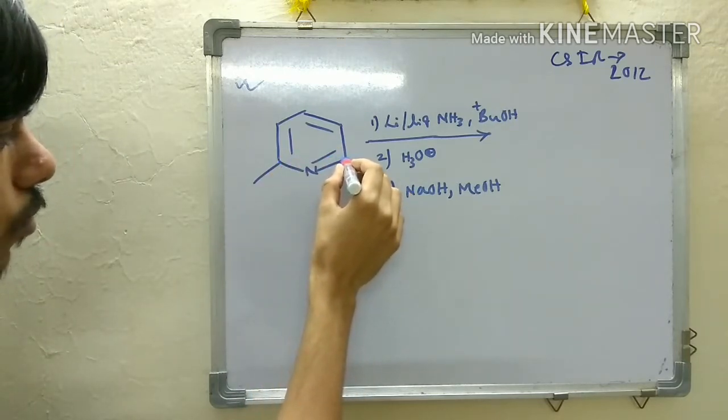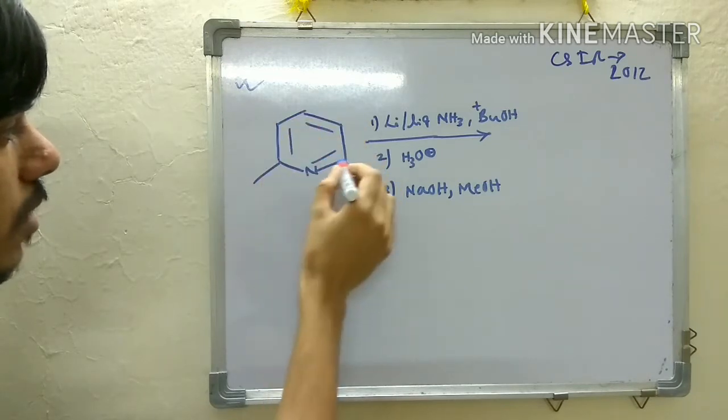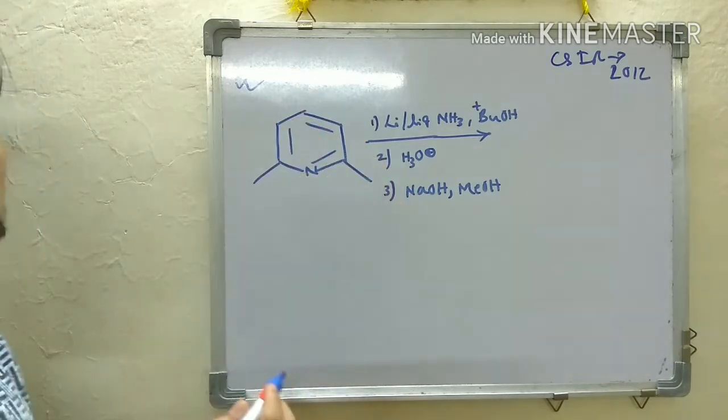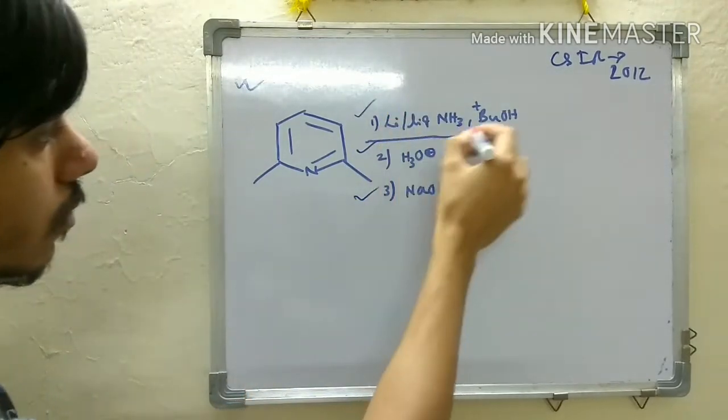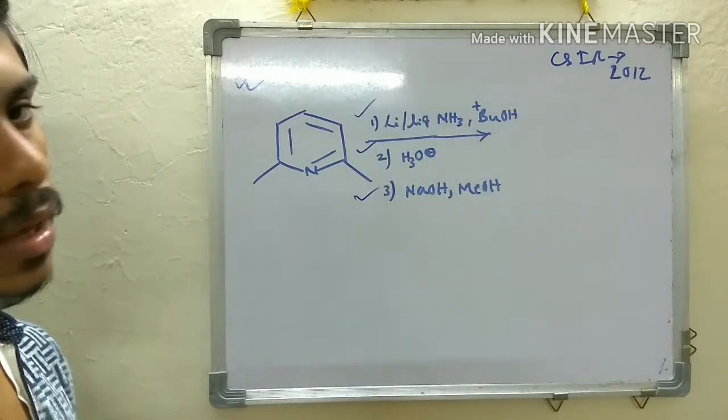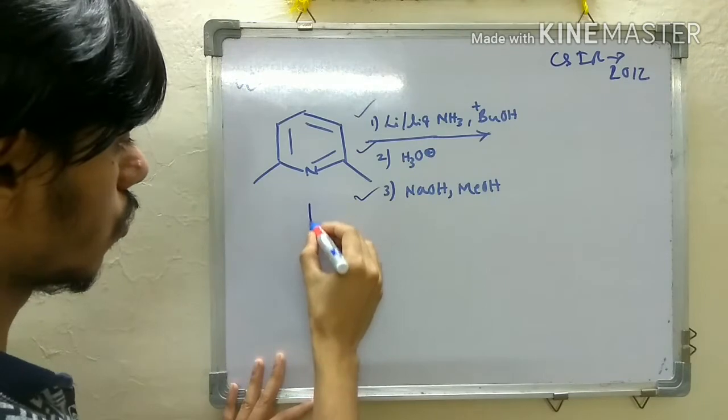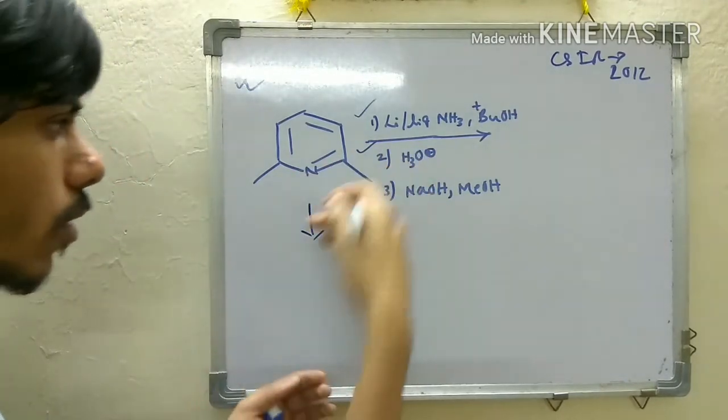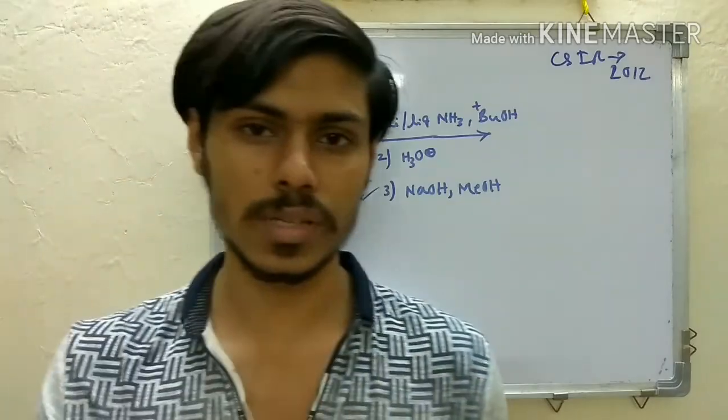The 2, 3, 4, 5, and 6 positions are substituted with two methyl groups, and it's reacted with these three conditions. By the first condition, you may guess this is nothing but Birch reduction. Before discussing this problem, first look at the options given here.